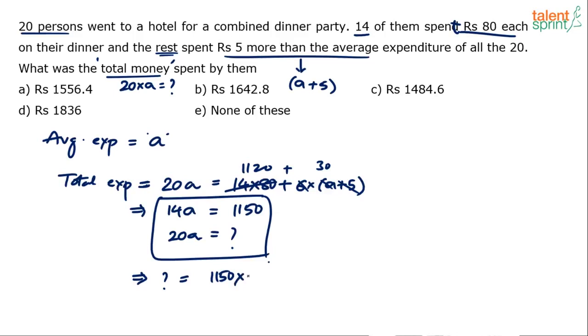Simplify this to get the answer. This question mark here should be equal to 1150 into 20 divided by 14. Calculation is your lookout—I'm sure you're working on your speed math, mental mathematics on a daily basis. Once you finish the calculation, you'll find out that the answer approximately comes out to be 1642.8. So option B is the answer.